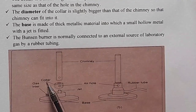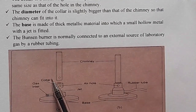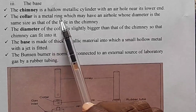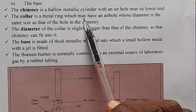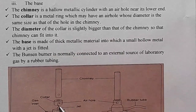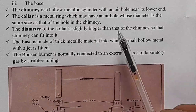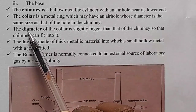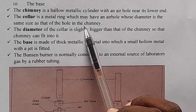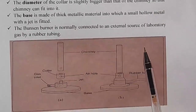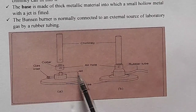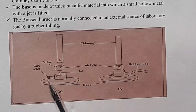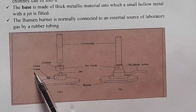Thereafter we are having the collar. The collar is a metal ring which may have an air hole — that's the air hole in the collar — whose diameter is the same as that of the hole in the chimney. Then thereafter we are having the jet, and after that we are having the gas inlet.